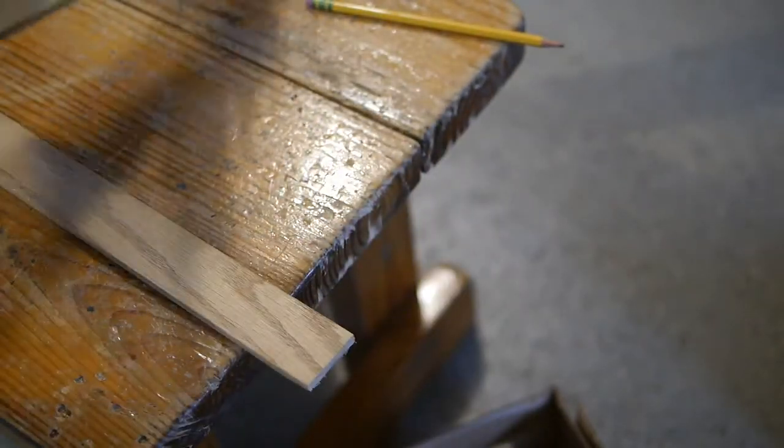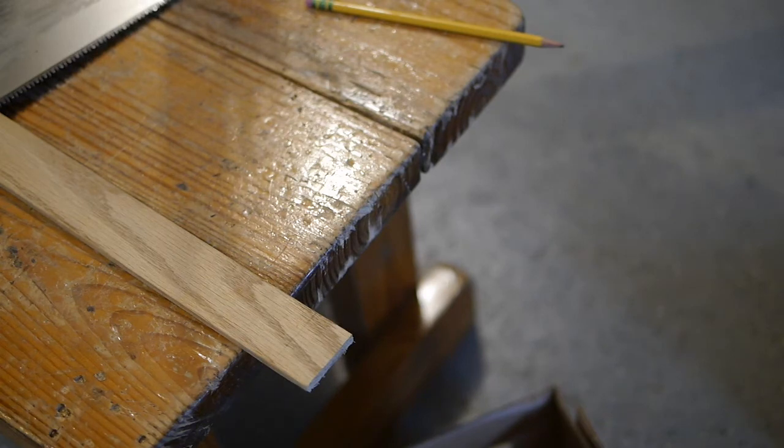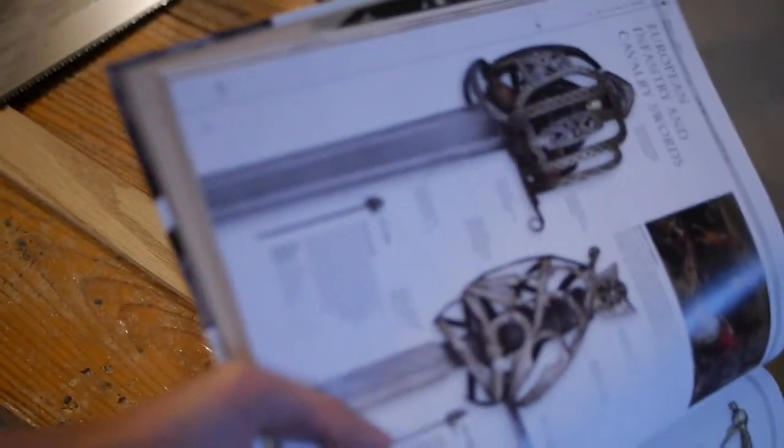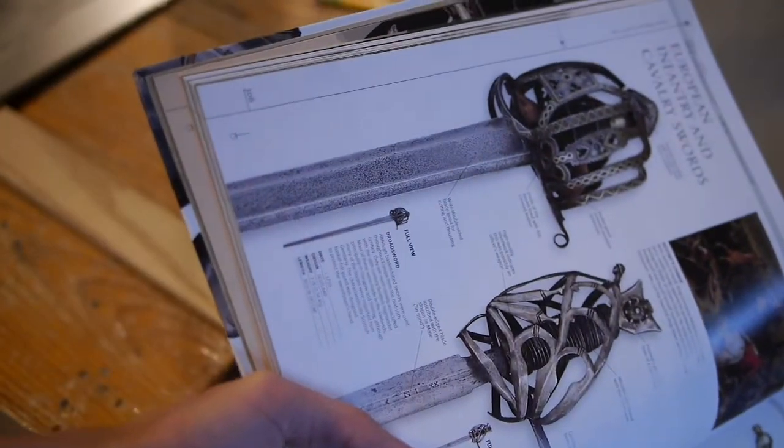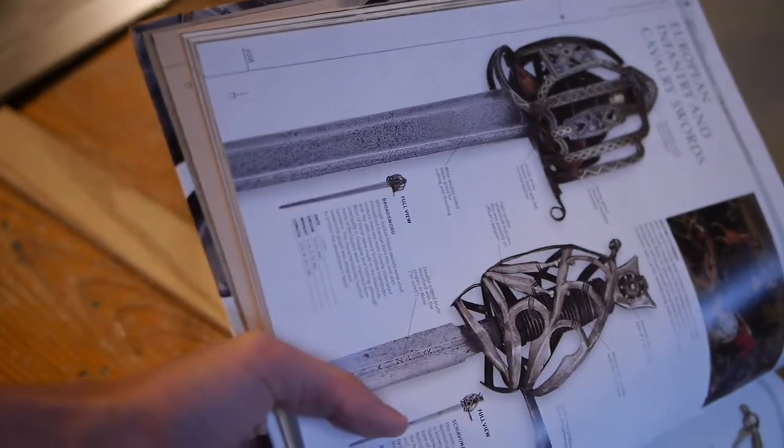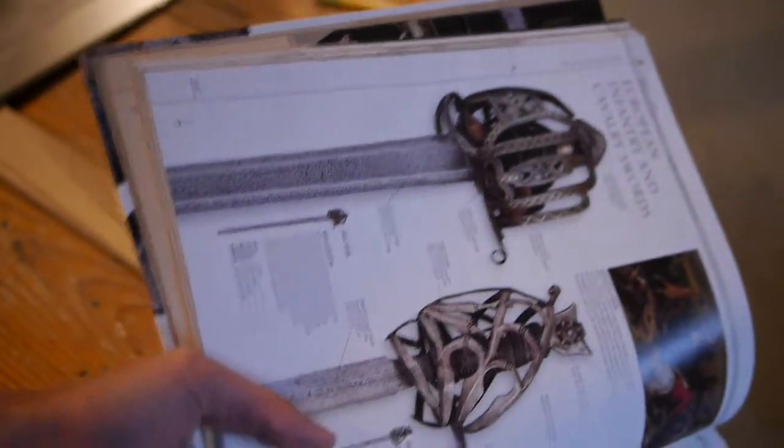Alright, we're good. The sword I'm using as a model is this sword right here. This one right here, it's the one I'm following. It's from Scotland. It's got the basket hilt, very fancy.